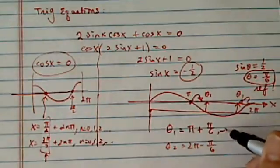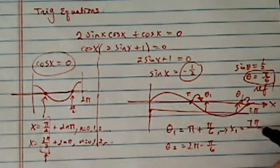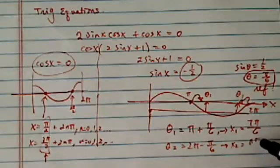So we have x1 is equal to, let's see, what do we have? 7 pi over 6. And then x2 here is 11 pi over 6.